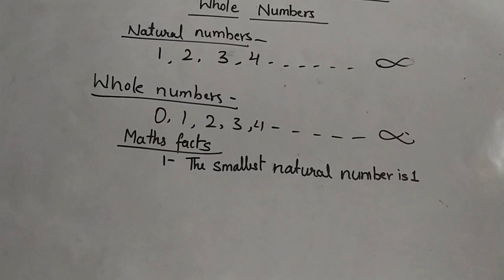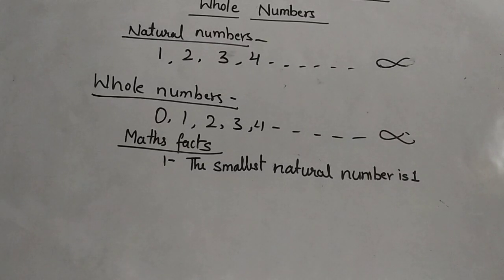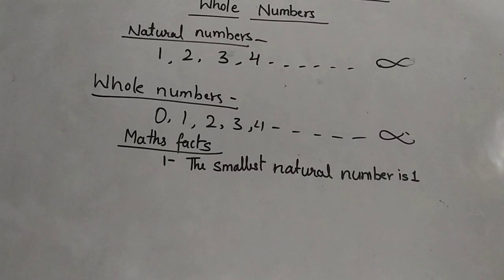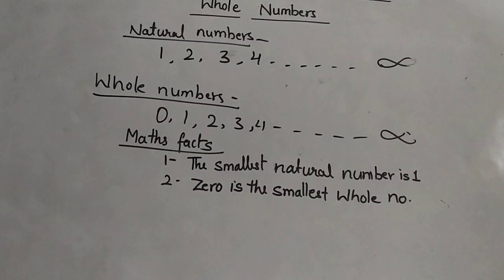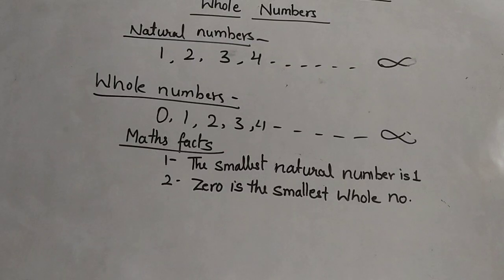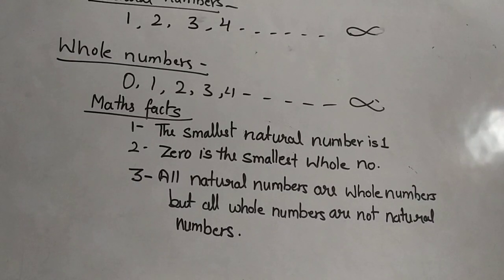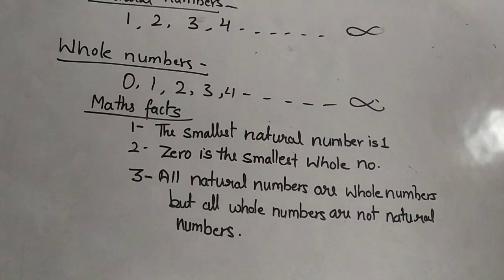We will discuss some math facts related to natural numbers and whole numbers. First, the smallest natural number is 1. Second, 0 is the smallest whole number. Third fact: all natural numbers are whole numbers, but all whole numbers are not natural numbers.